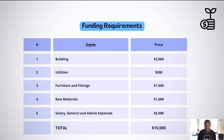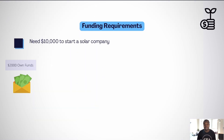In total, Mr. Ismo needs $10,000 to start his business. However, he only has $2,000 in savings, so he needs an additional $8,000.